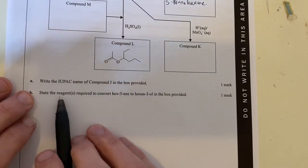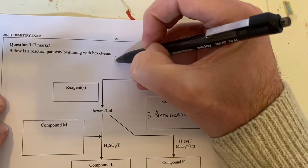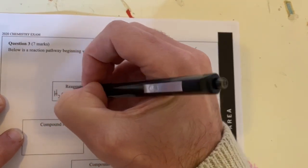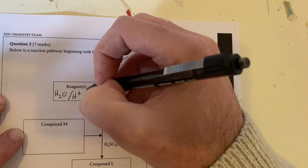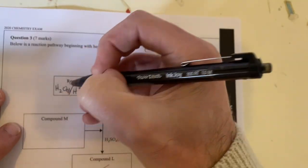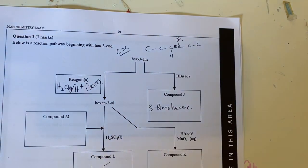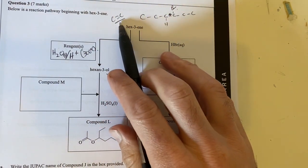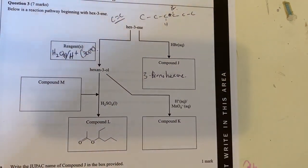Moving on - state the reagents required to convert hexene into hexan-3-ol in the box provided. We're breaking a double bond and creating an alcohol. That is done through using water and an acid. This normally happens around about 300 degrees Celsius, so the state for water would be gas. The reagents required to turn an alkene into an alcohol is water in the presence of an acidic catalyst. And that's part B done.